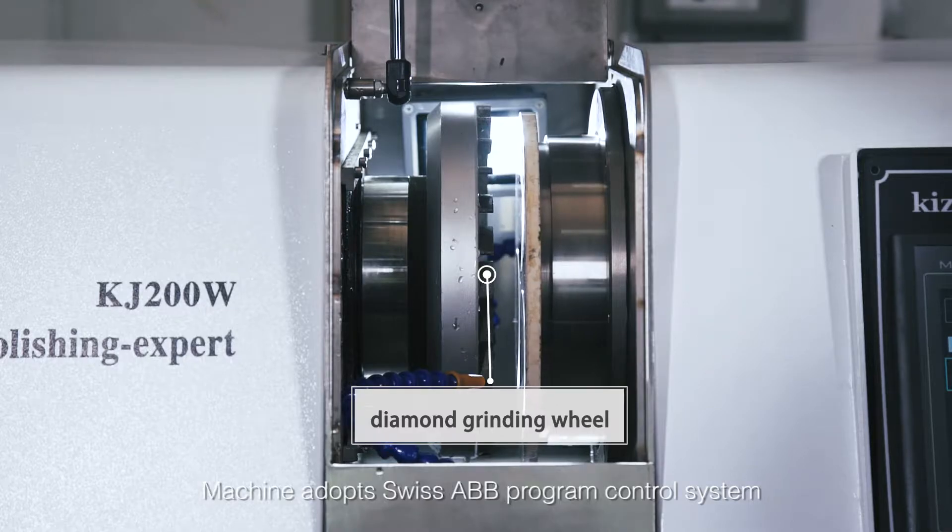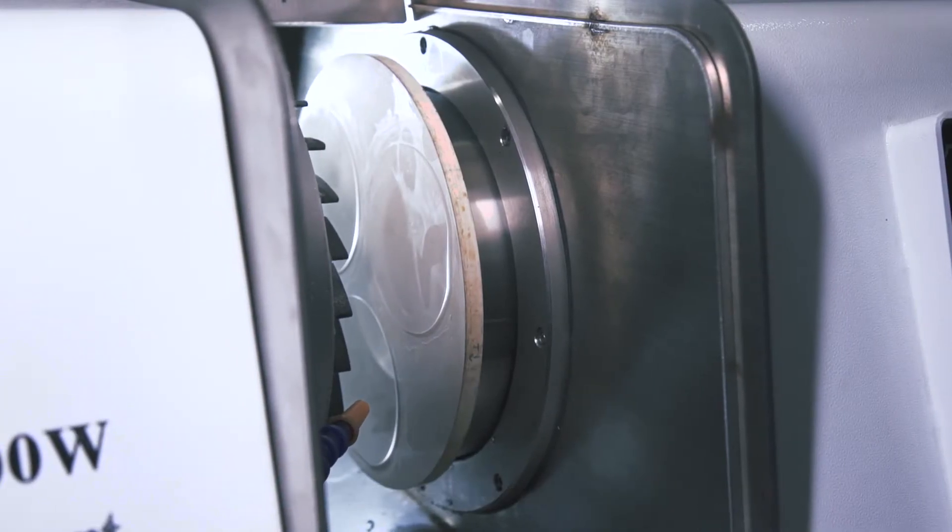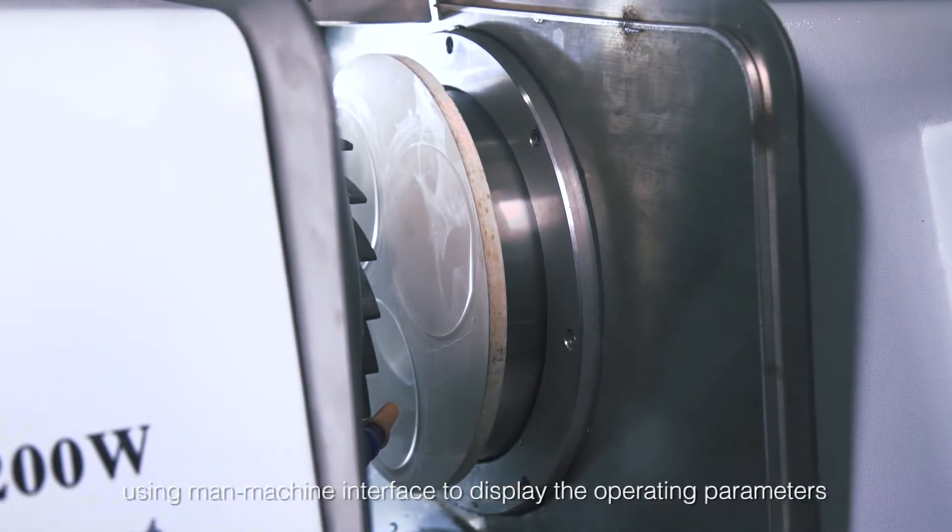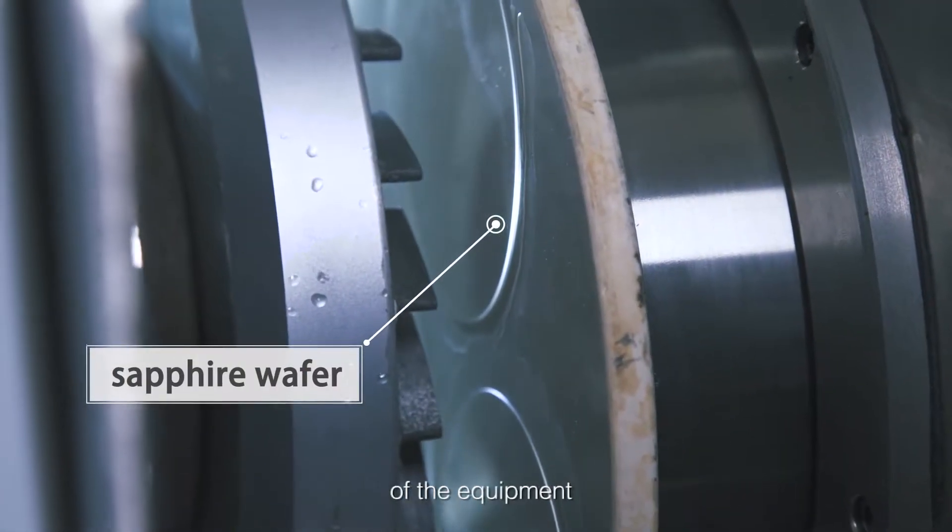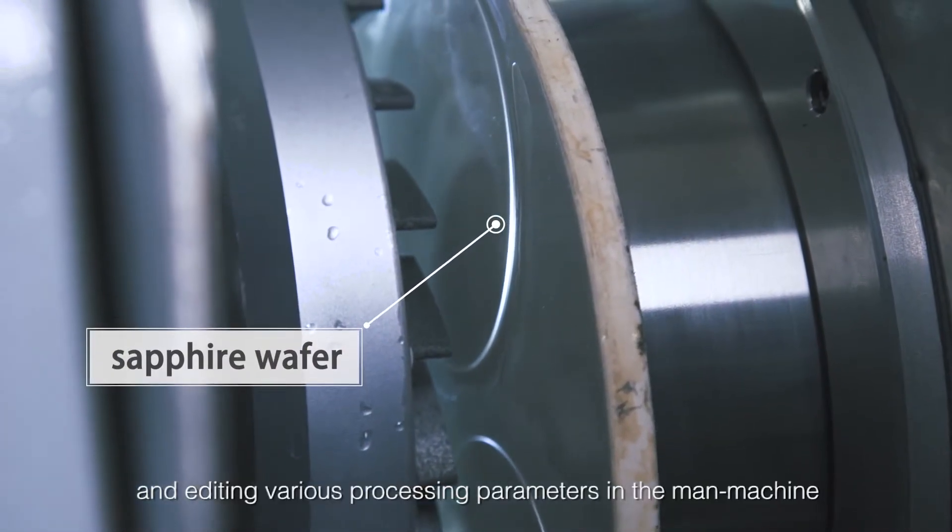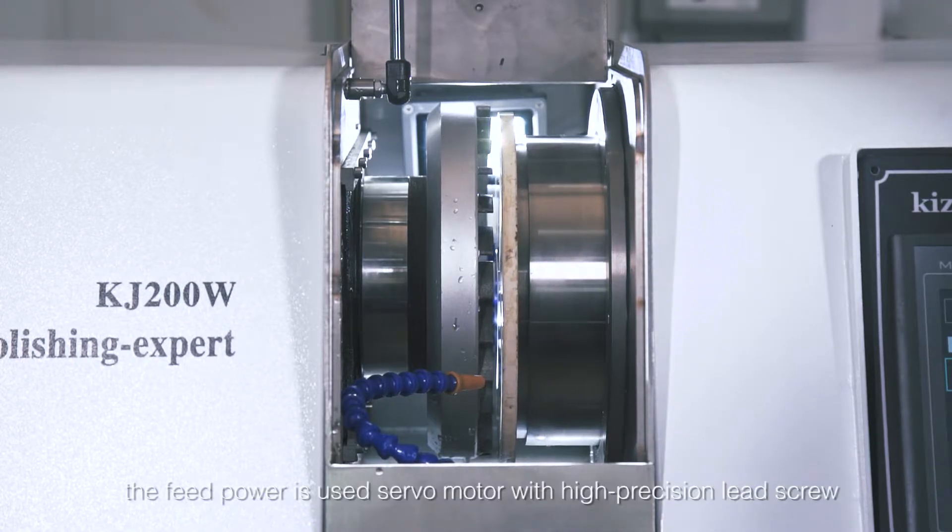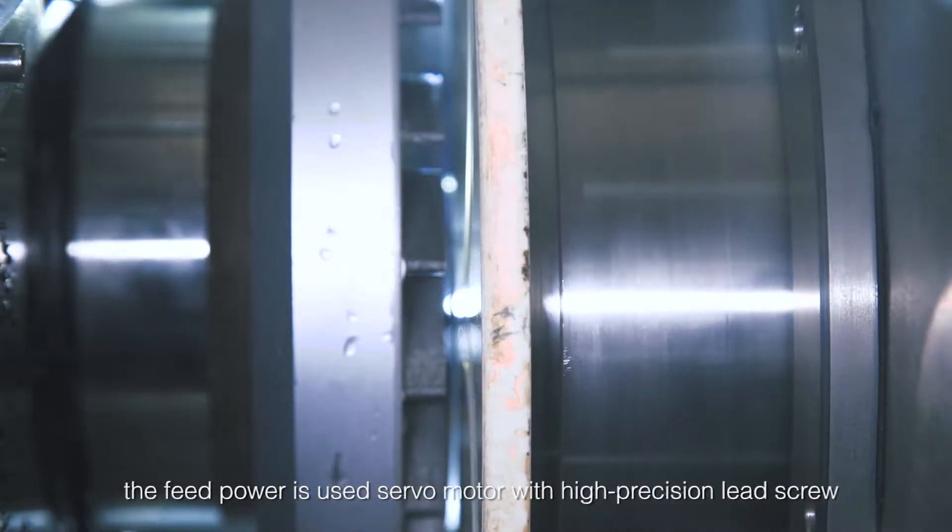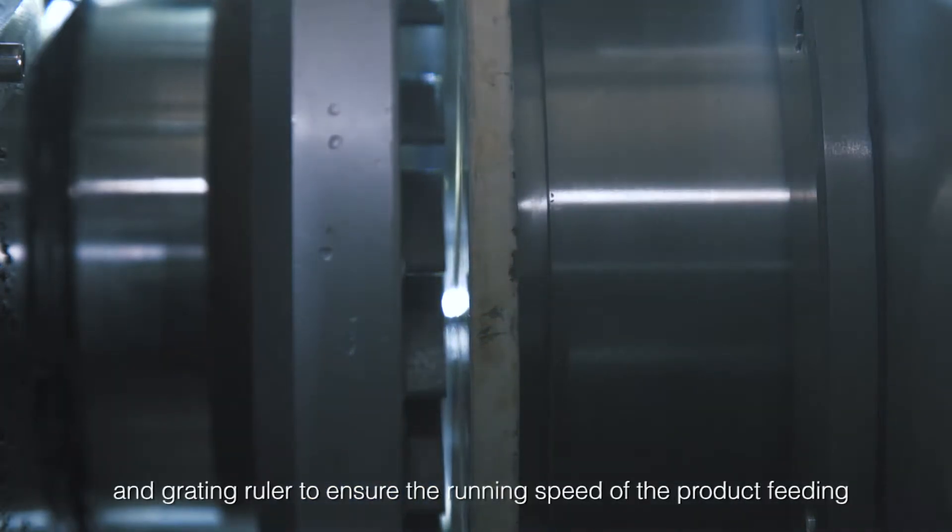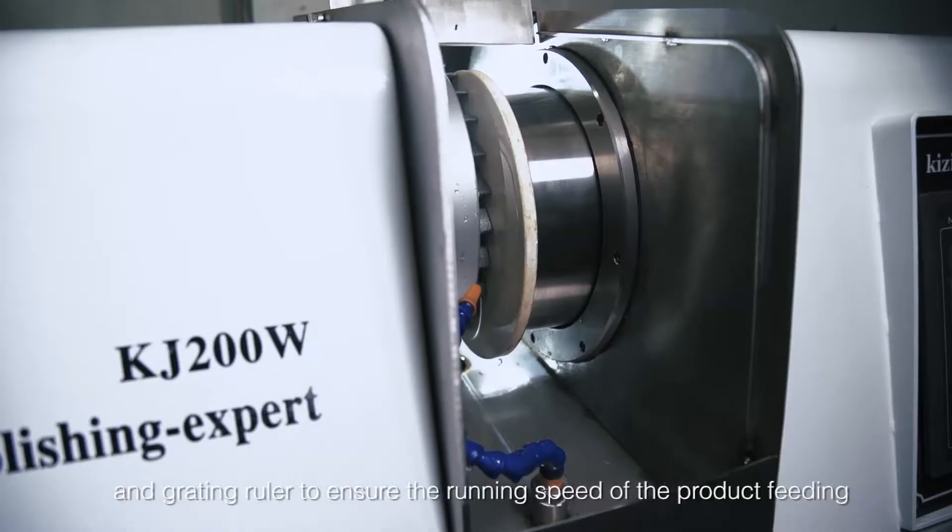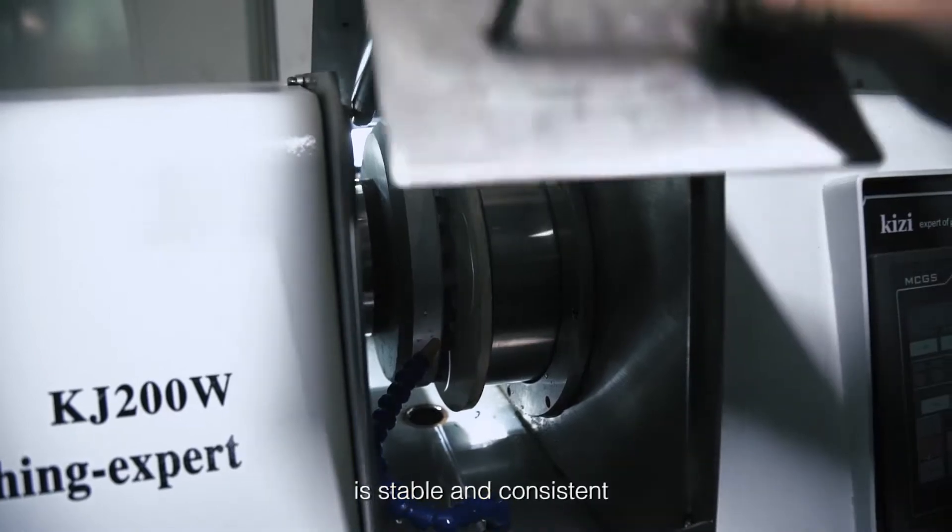Machine adopts Swiss ABB program control system using man-machine interface to display the operating parameters of the equipment and editing various processing parameters. The feed power uses a servo motor with high-precision lead screw and grating ruler to ensure the running speed of the product feeding is stable and consistent.